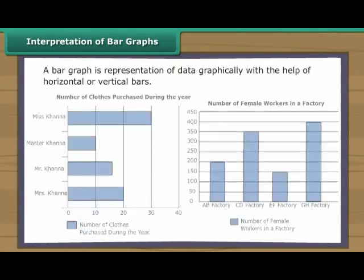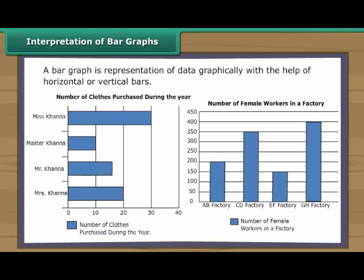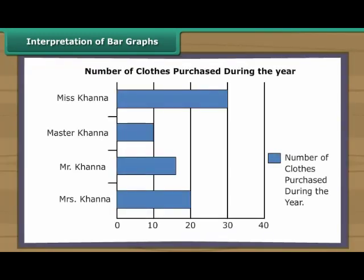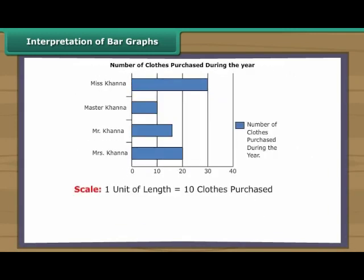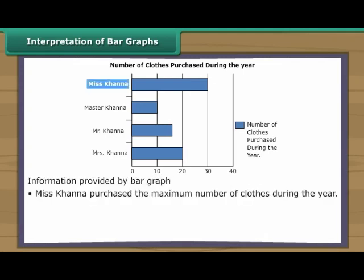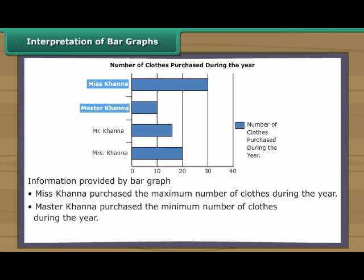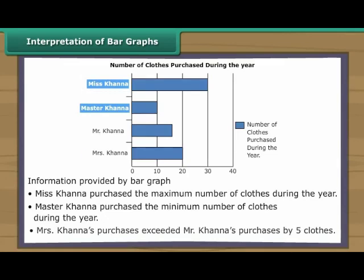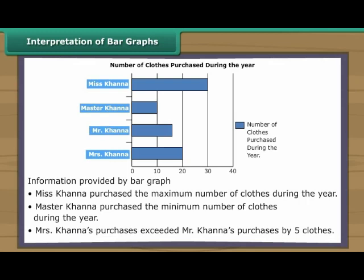Interpretation of bar graphs: A bar graph is a representation of data graphically with the help of horizontal or vertical bars. Bar graphs are easier to draw than pictographs. This horizontal bar graph shows details of clothes purchased by the members of the Khanna family during the year. The thickness of the bars and the gap between the bars are identical. One unit of length represents 10 clothes purchased. Ms. Khanna purchased the maximum number of clothes during the year. Master Khanna purchased the minimum number of clothes. Mrs. Khanna's purchases exceeded Mr. Khanna's purchases by 5 clothes.